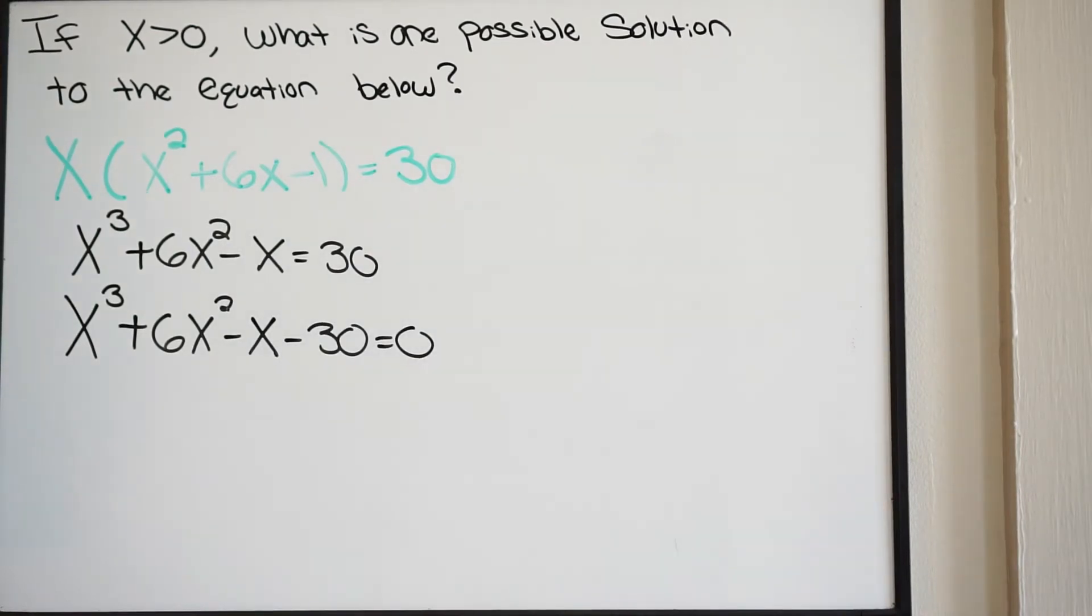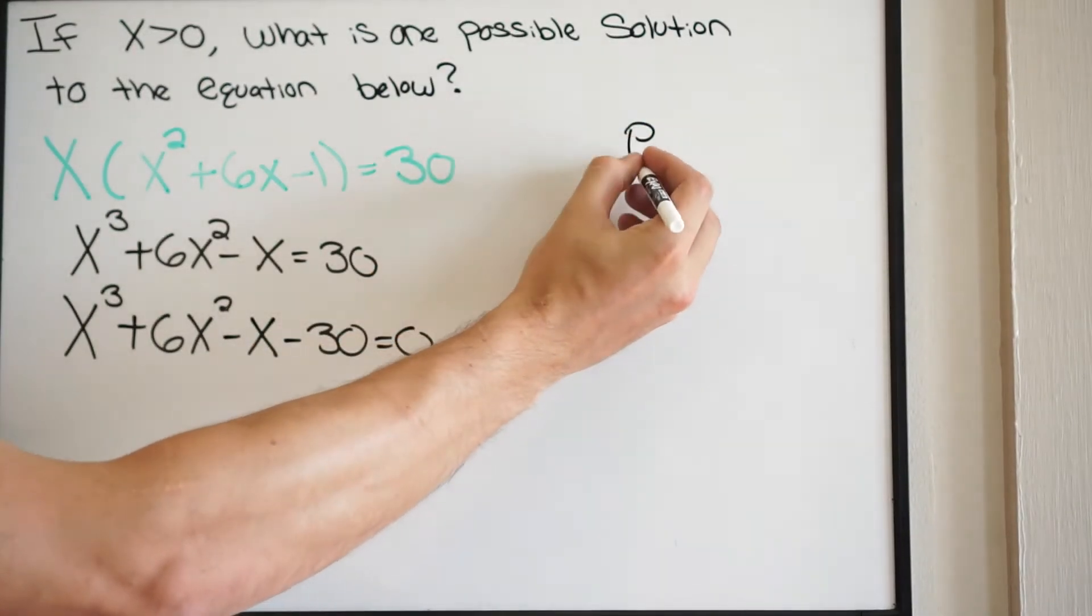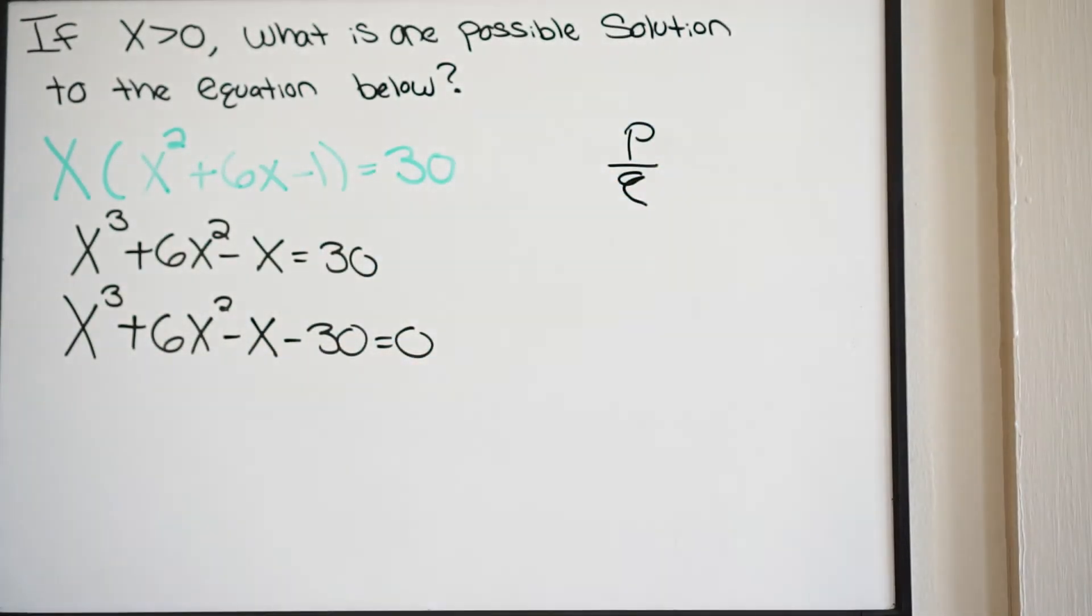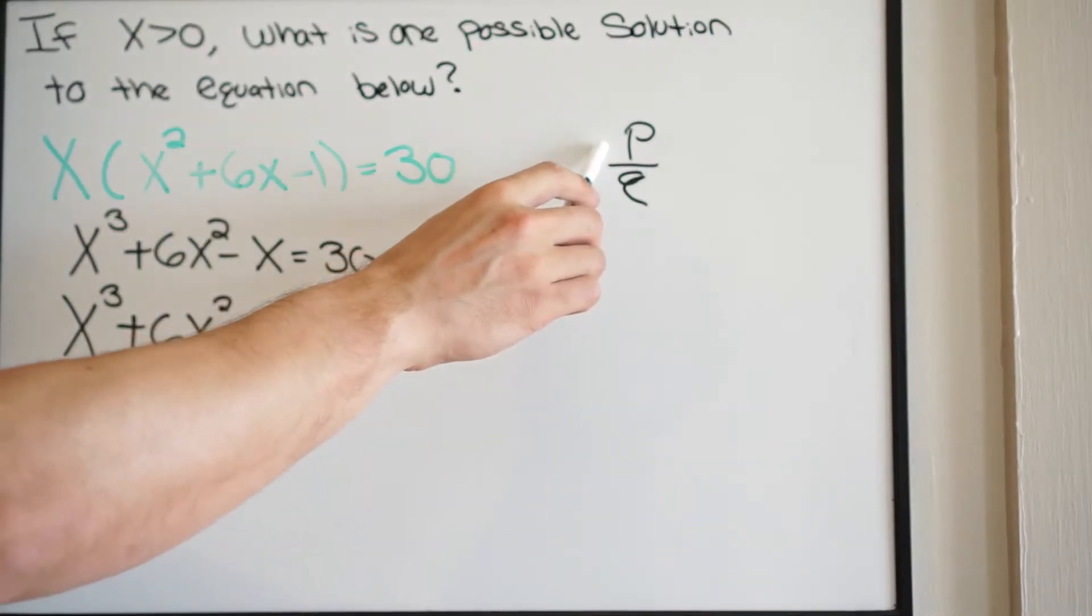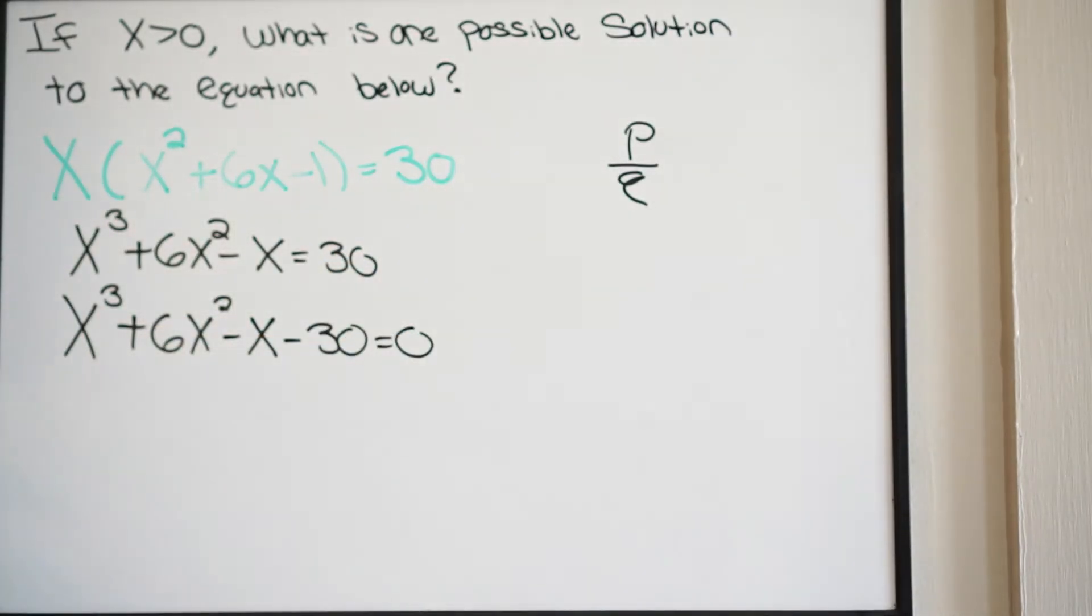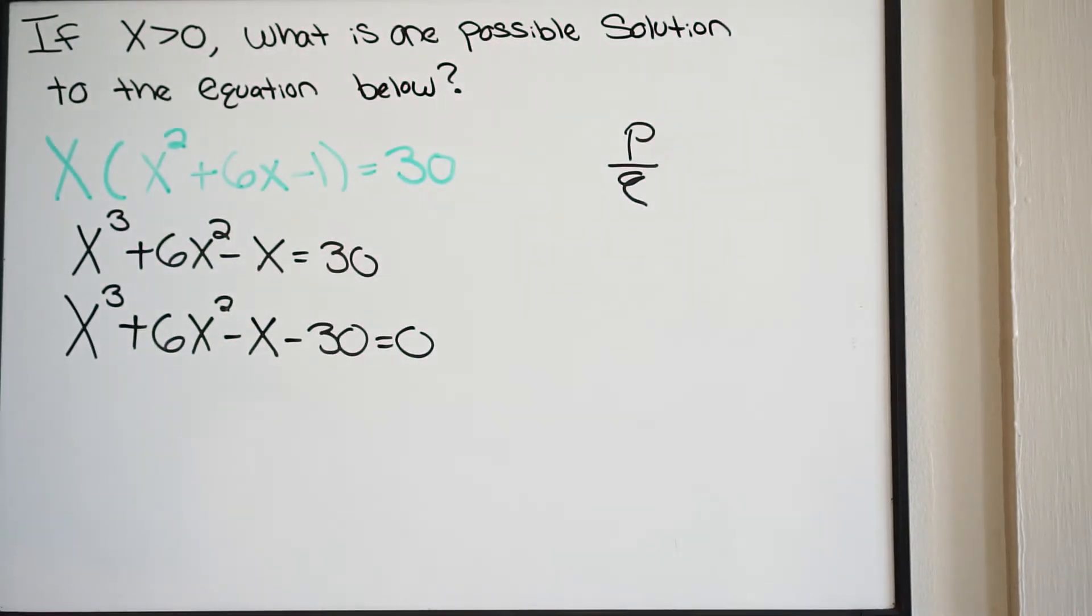We have talked about the rational root theorem in the past. That's going to be P over Q, where P is your constant and Q is your leading coefficient. We're going to write out factors for our constant and factors of our leading coefficient. The result is going to give us possible rational roots of this polynomial.